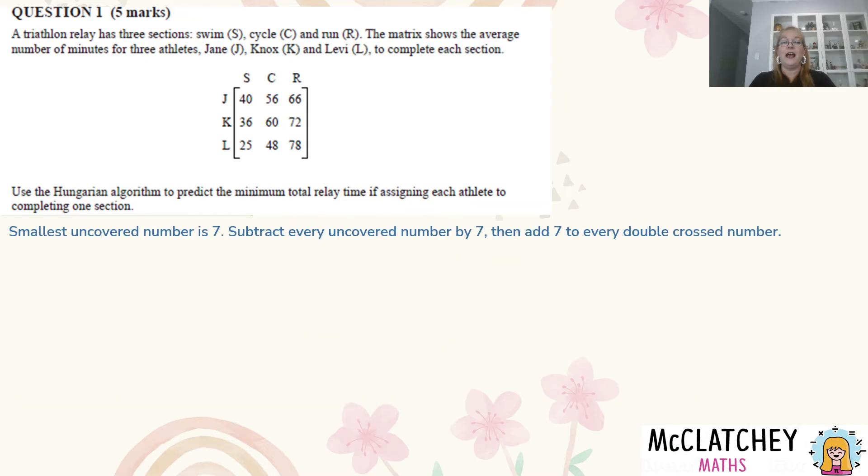Okay so what I'm going to do for the Hungarian algorithm is I'm going to identify my smallest uncovered number - that's seven - and then I'm going to subtract all of these numbers here by seven and then this double cross number here I add back seven. So the way I remember that is that that looks like a plus - plus that number back in there, take it away from here.